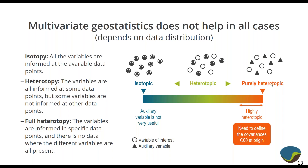At the other end of the spectrum, in a purely heterotopic case, we don't have any sample locations where we have both types of measurement. That situation is more difficult to work with — it's not impossible. You can calculate cross-covariances, but without any locations with both variables defined, we can't calculate the point correlation between the two. We have to do some migration from one dataset to the other over short distances and do some comparisons there. The problems are not insurmountable but they do present some extra difficulties.